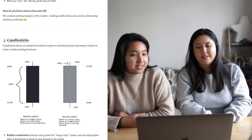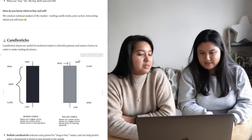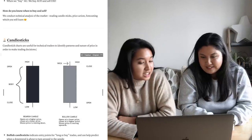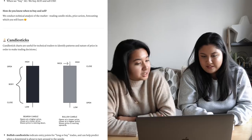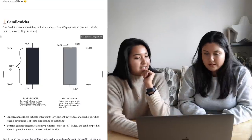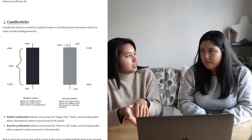We're moving on to candlesticks. Candlestick charts are useful for technical traders to identify patterns and the nature of price in order to make trading decisions. We need to know the difference between a bullish candle and a bearish candle, because that tells us whether the market's moving up or down. A bearish candle basically means price is going down, and a bullish candle means price is going up.